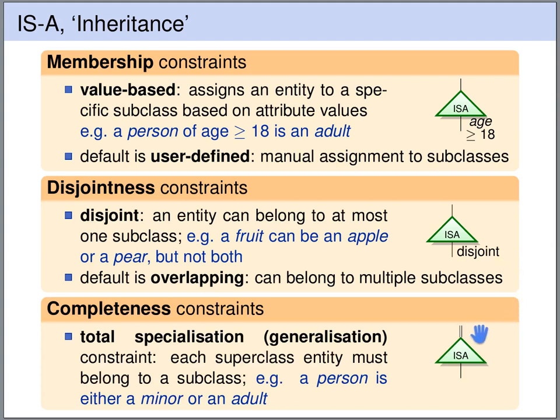Finally, we can use a double line from the ISA node to the higher level entity set to indicate total participation of the higher level entity set in this ISA relation. Total participation means that every higher level entity belongs to at least one of the lower level entity sets. An example would be the higher level entity person with lower level entities adult and minor — every person is either an adult or a minor.